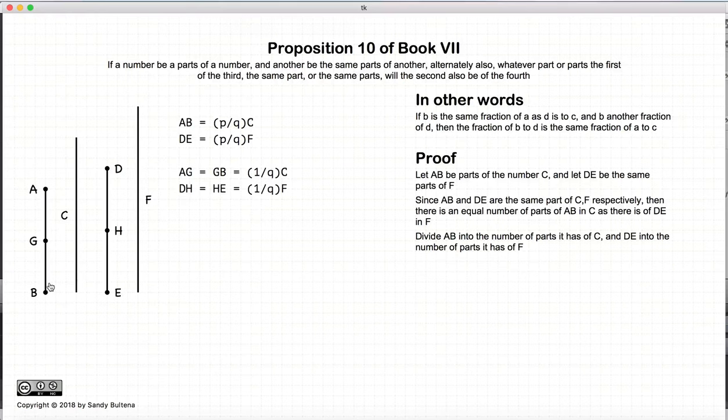AG is equal to GB is equal to some part of C, and DH and HE will be the same part of F, or the same fraction of F.